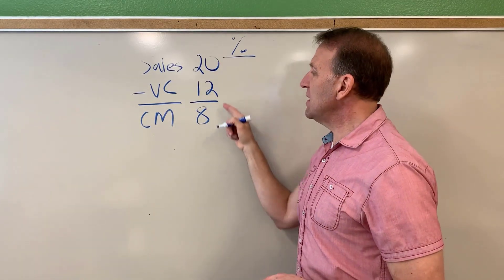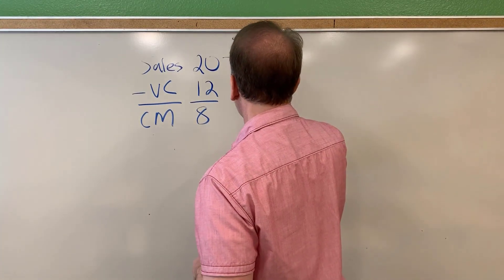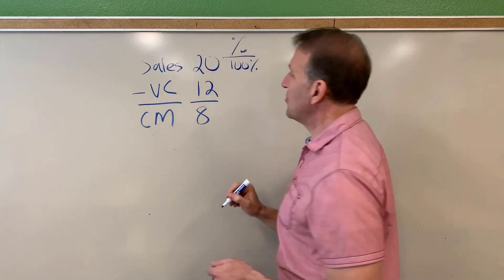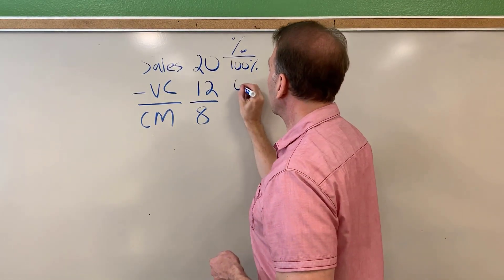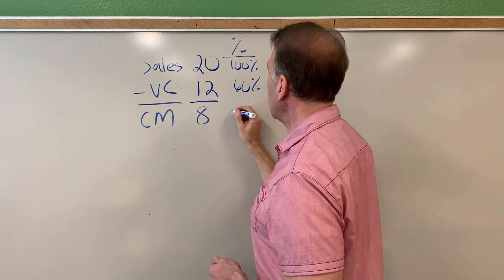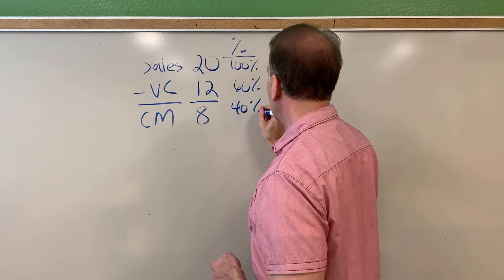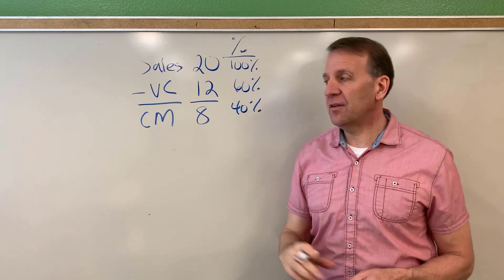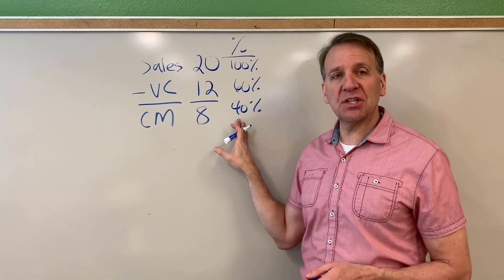We divide all of these numbers by sales. So 20 divided by 20 is 100%, 12 divided by 20 is 60%, and 8 divided by 20 would be 40%. That's our contribution margin per unit and our contribution margin ratio.